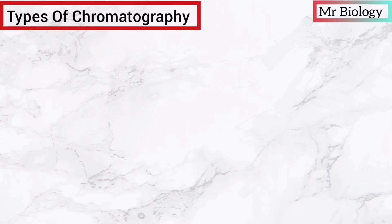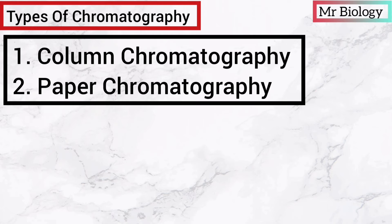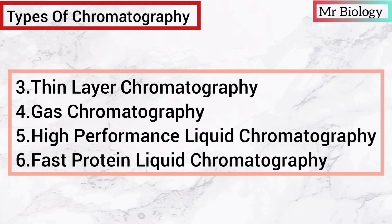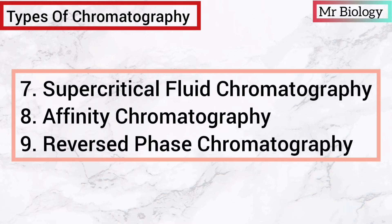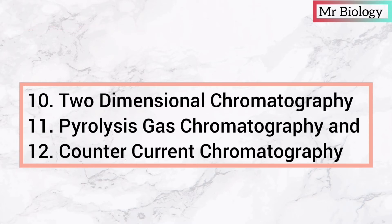Chromatography may be of different types such as column chromatography, paper chromatography, thin layer chromatography, gas chromatography, high performance liquid chromatography, fast protein liquid chromatography, supercritical fluid chromatography, affinity chromatography, reverse phase chromatography, two-dimensional chromatography, pyrolysis gas chromatography, and counter current chromatography.